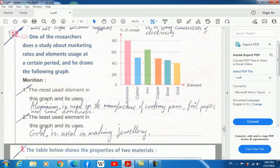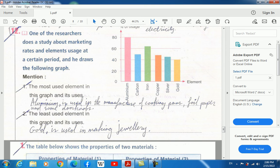One of the researchers does a study about marketing rates and elements usage at a certain period, and he draws the following graph. On the y-axis or the vertical axis, we have the percentage of usage. On the horizontal axis, we have the elements that are used: aluminum, carbon, iron, copper, silver, and gold. Mention the most used element in the graph and its uses. From the graph, it's obvious that aluminum is used by percentage of 80%, so aluminum is the most element used.